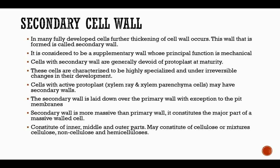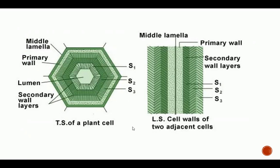Cells with active protoplasts, such as xylem rays and xylem parenchyma cells, may have secondary walls. The secondary wall is laid down upon the primary wall with the exception of pit membranes. The secondary wall is more massive than the primary wall and constitutes the major part of a massive-walled cell. It constitutes inner, middle, and outer parts, and chemically may be made up of cellulose or mixtures of cellulose, non-cellulosic polysaccharides, and hemicelluloses.